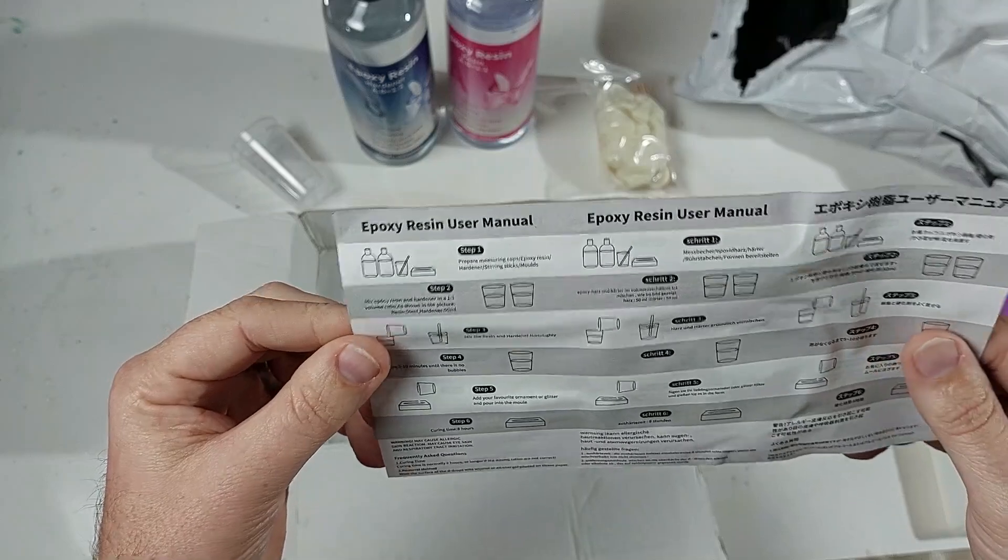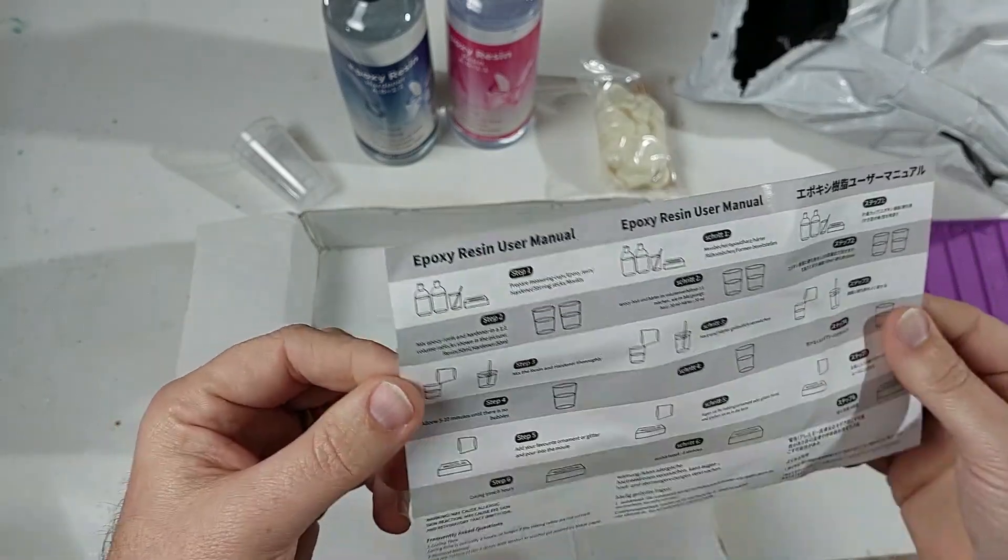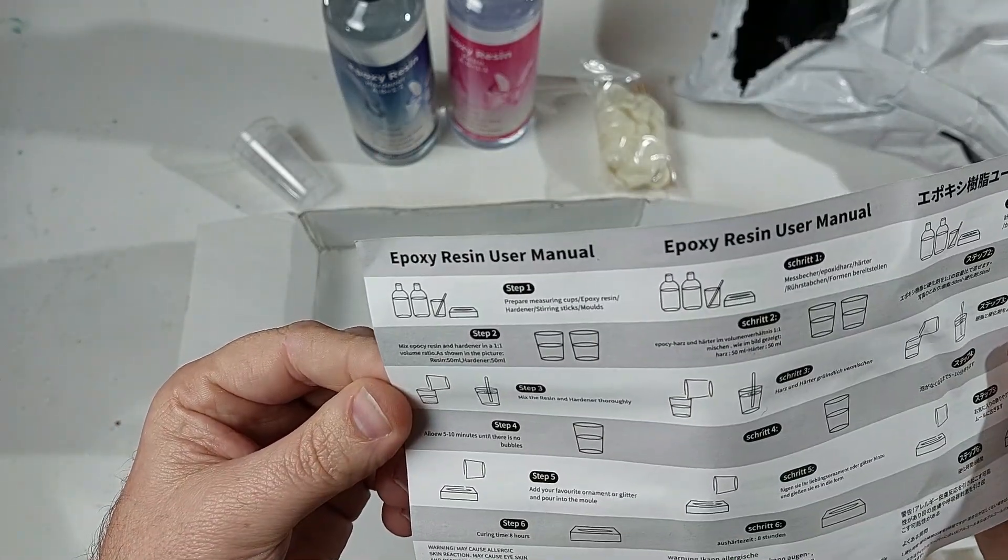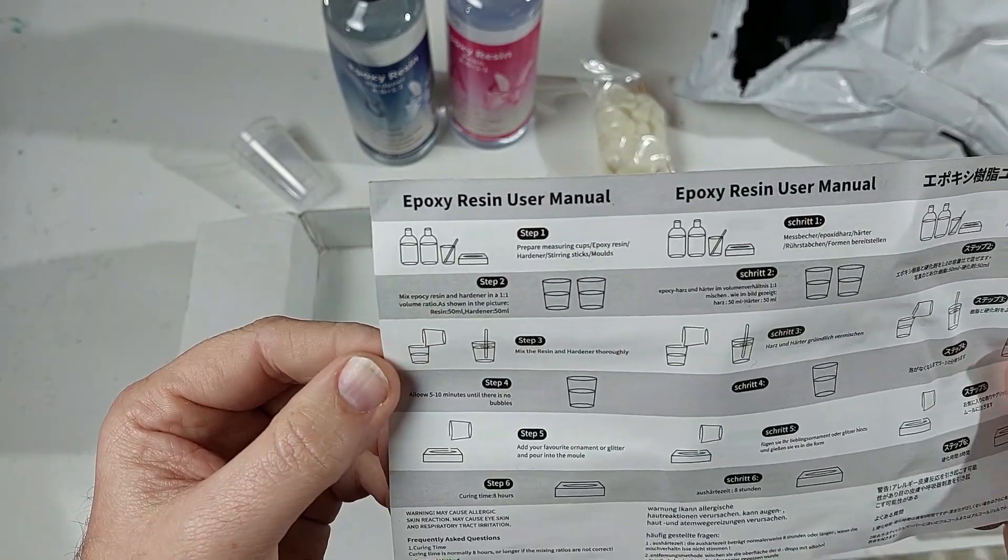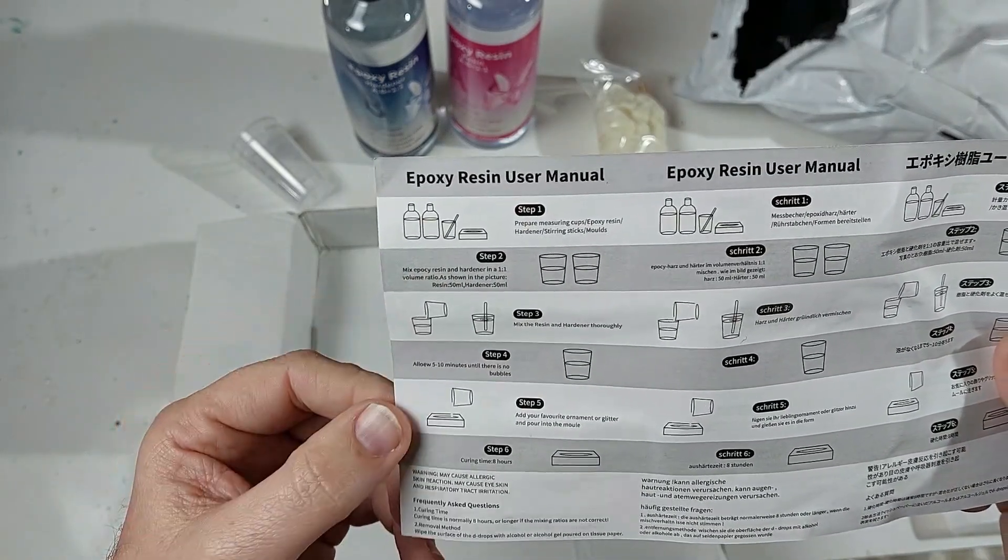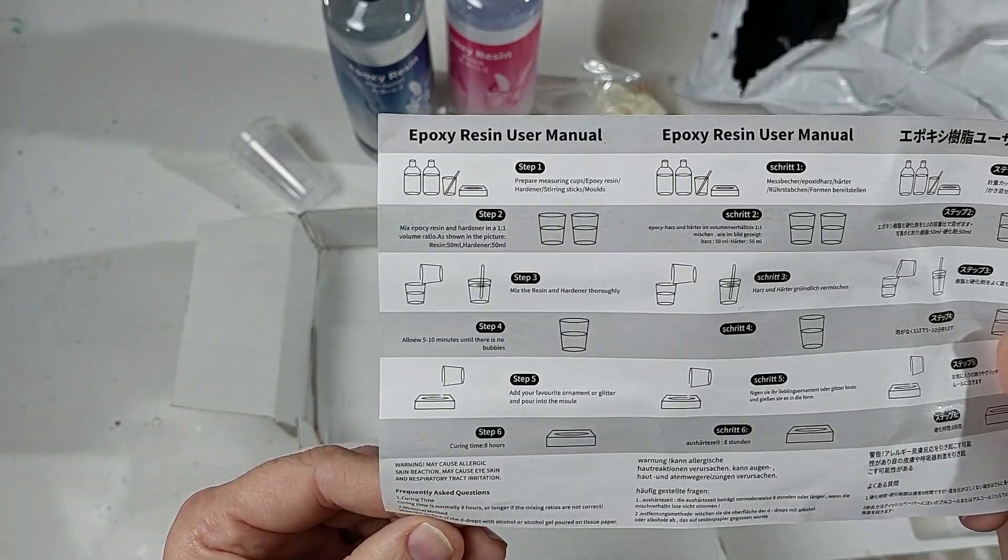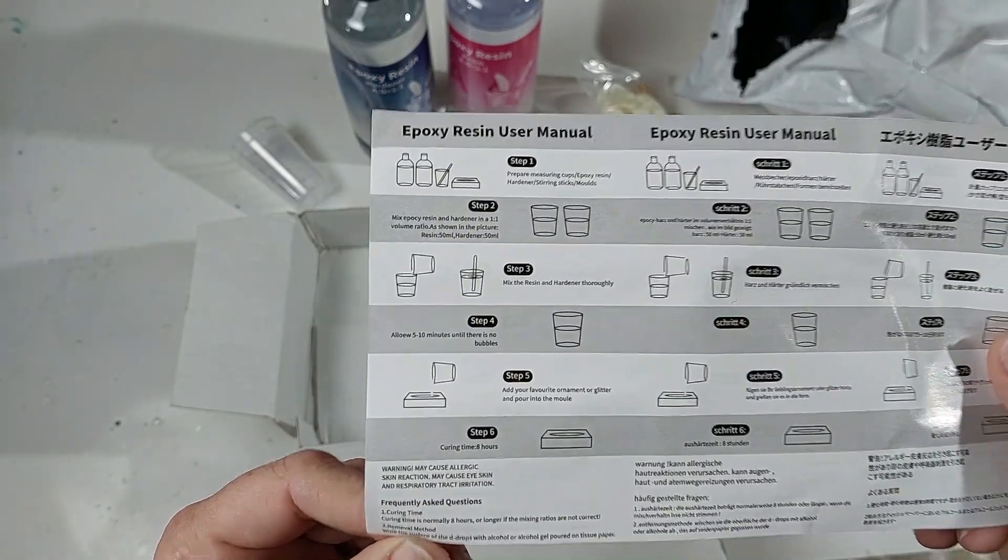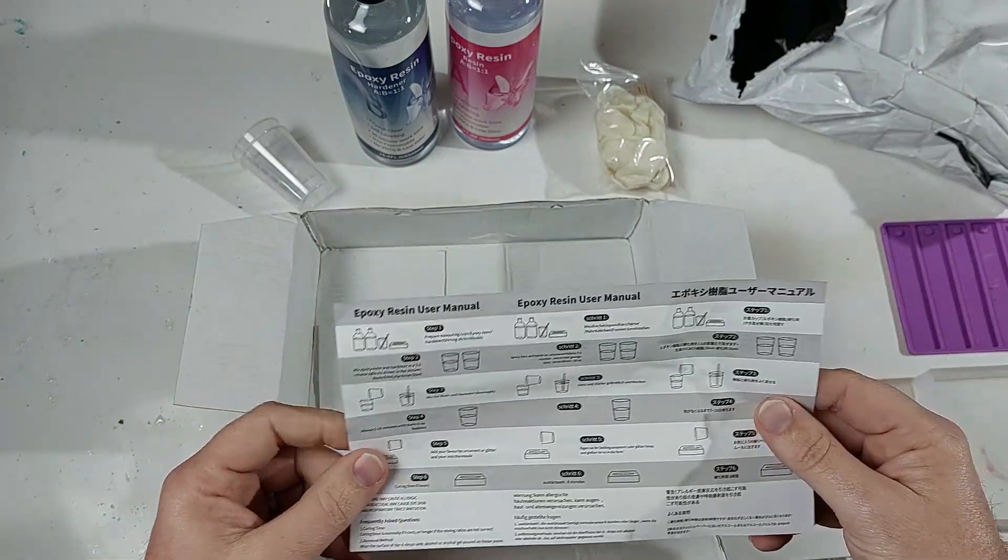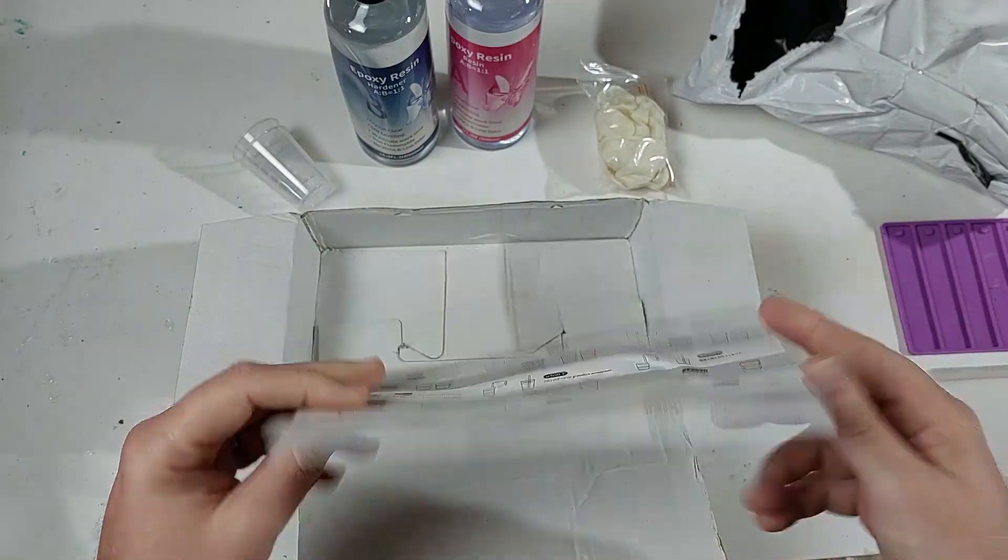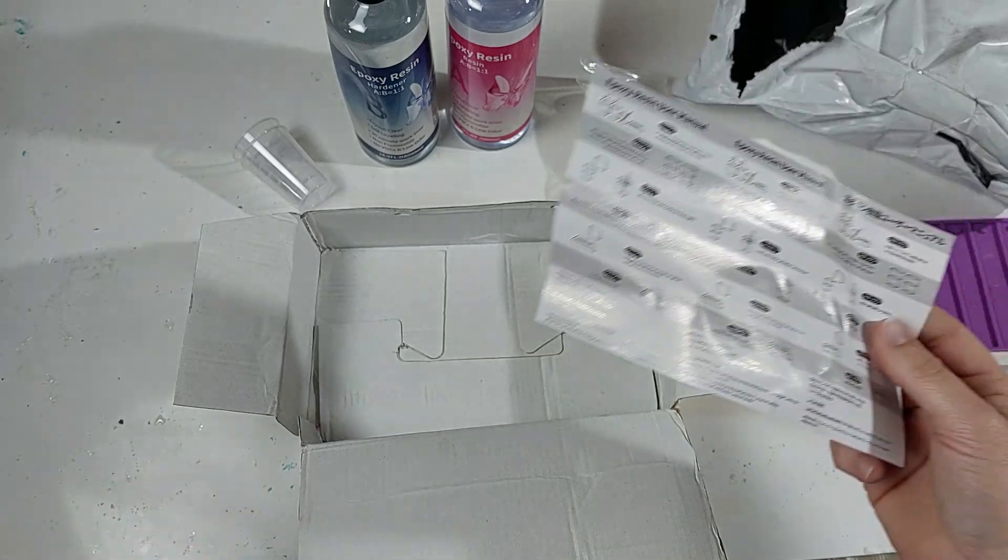Quite impressed that it actually came with instructions. I wouldn't have expected that from Temu. So pretty easy. One to one mixing ratio. Mix them up and then pour and wait. I've got an eight hour curing time so that's pretty quick. So we'll be able to do this and within eight hours see our final results.